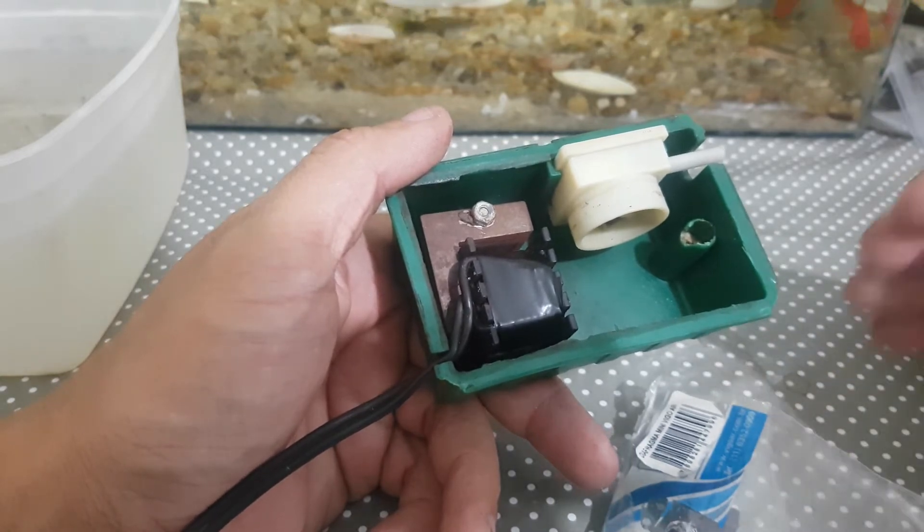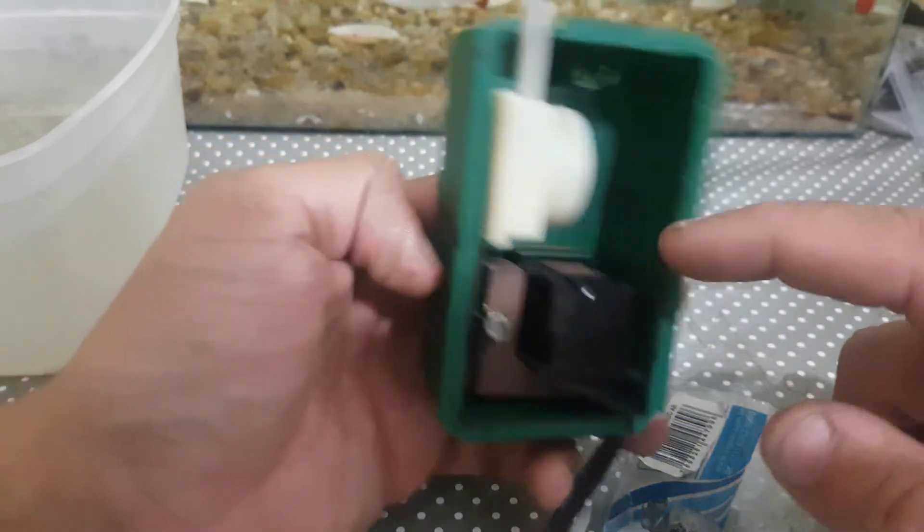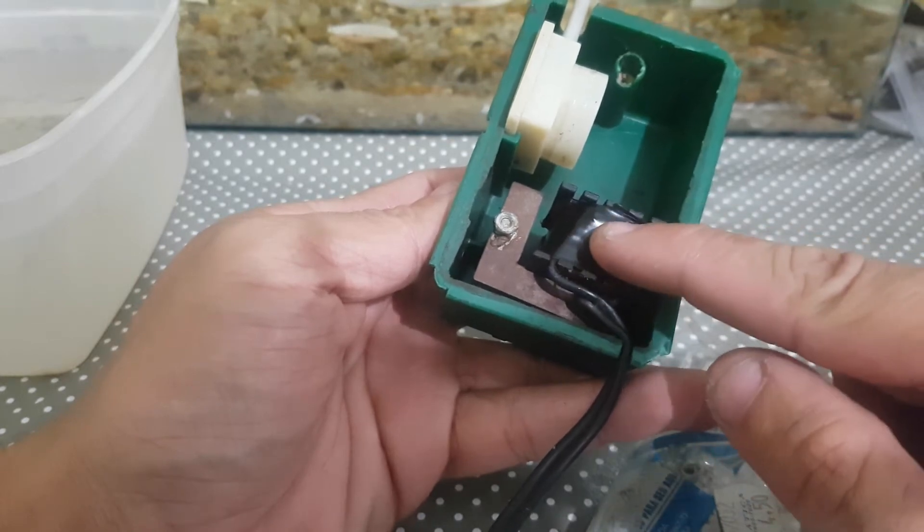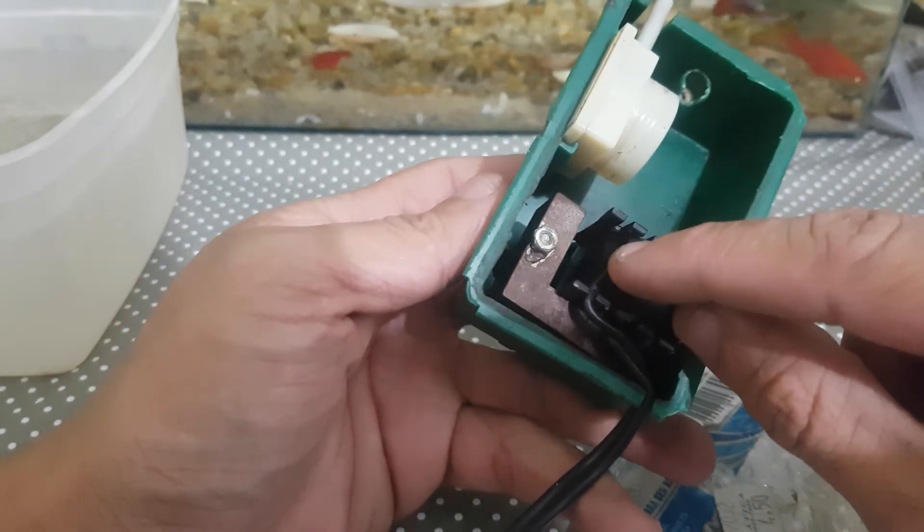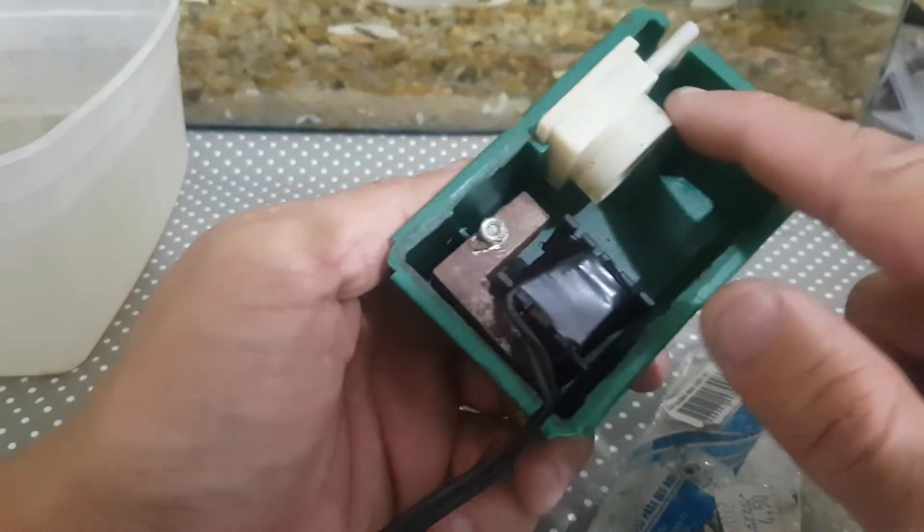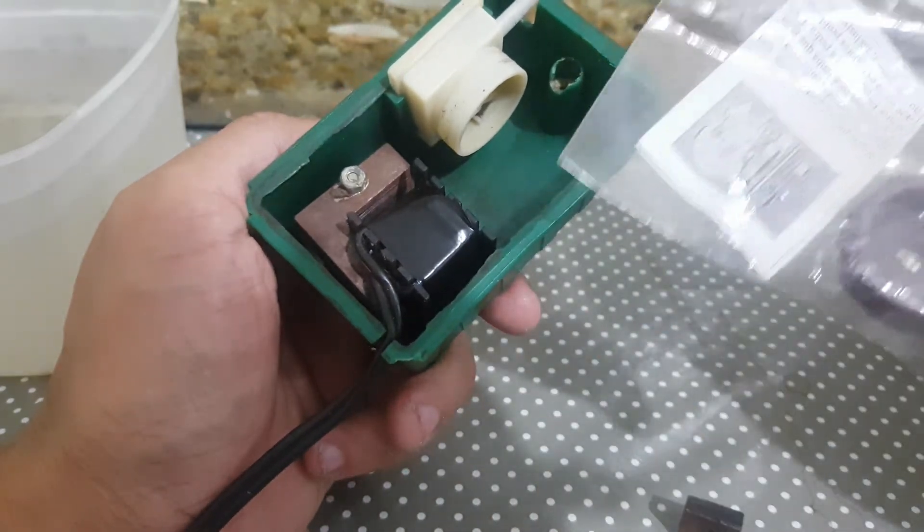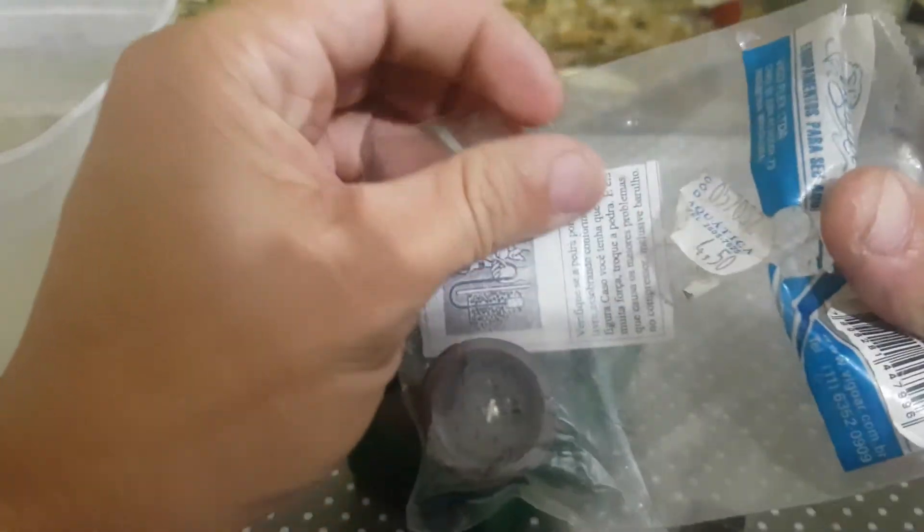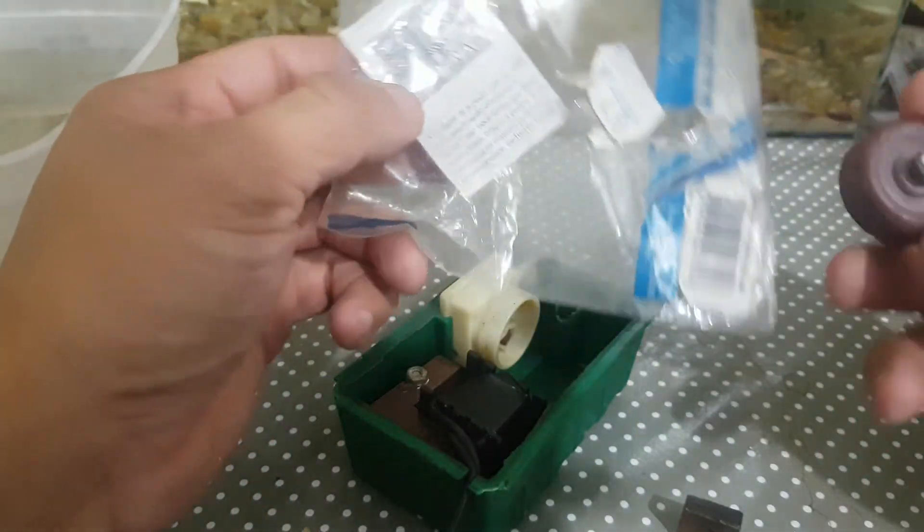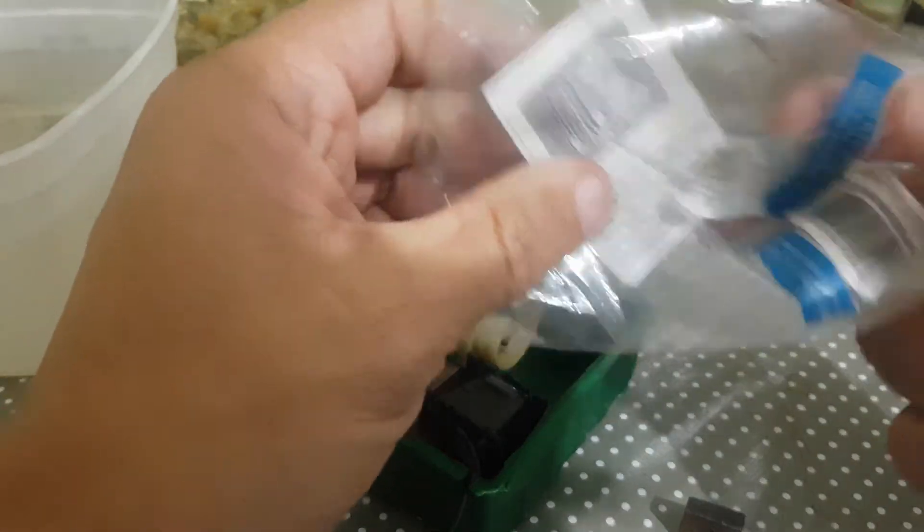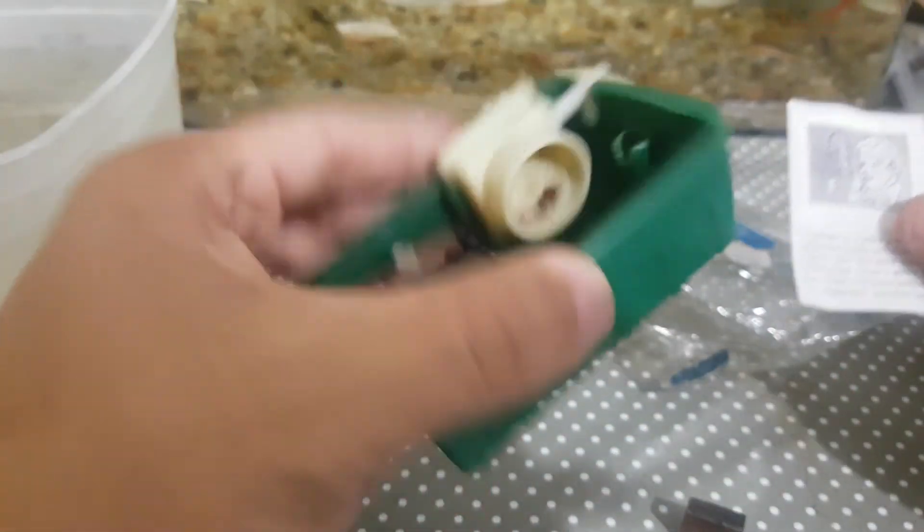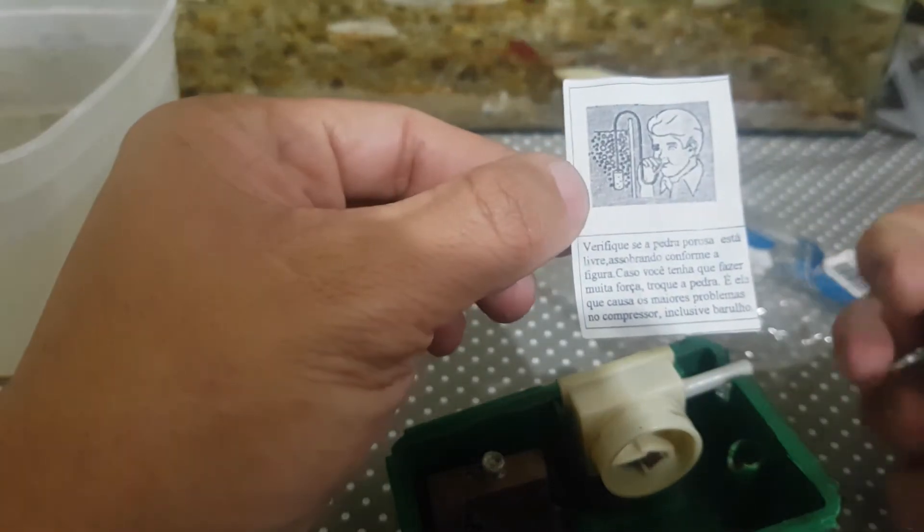Então ela não fica sendo utilizada direto. E esse tipo de bomba, enquanto ela tem esse mecanismo aqui, essa bobina, ela estiver funcionando, não estiver em curto, não estiver arrebentado o fio, enquanto ela estiver boa, o reparo é só a gente trocar quando acontecer da bombinha rasgar. Essa bombinha, ela é vendida. Esse reparo. E a gente faz a substituição. É muito simples, eu vou mostrar para vocês como é.